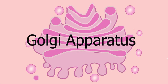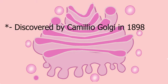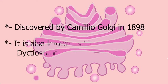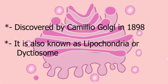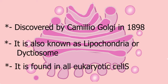In this video we will learn about Golgi apparatus. It was first discovered by an Italian cytologist Camillo Golgi in 1898. It is also known as lipochondria or dictyosome. It is found in all eukaryotic cells because it is a membrane-bonded organelle.